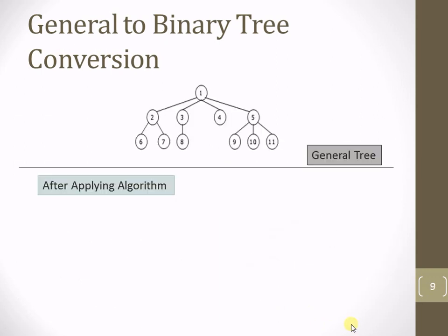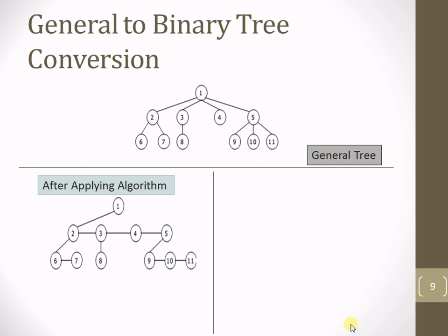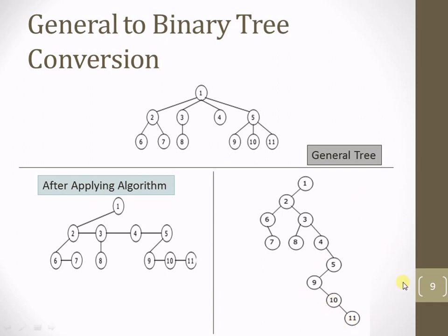After restructuring, your tree looks like this — this is the binary tree where every node has either 0, 1, or maximum 2 child nodes. Node 6 has no left child, so 7 is only its right child. Node 3 had a left child previously, but after connecting 3 with 4, node 4 becomes the right child of 3. Node 4 has no left child; 5 becomes the right child of 4. Node 5 has left child 9, and 10 is the right child of 9, and 11 is the right child of 10. In this way the conversion of the general tree to binary tree is completed.